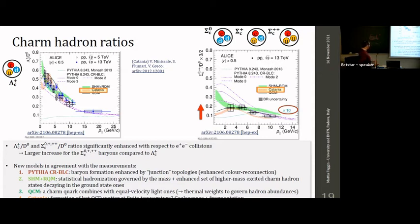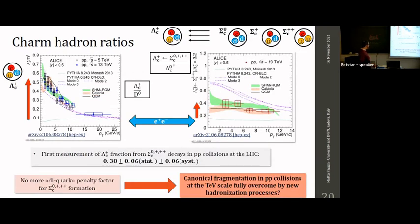All these models are in agreement within uncertainties with our measurement. We also provide the first measurement of the fraction of Lambda_c in proton-proton collisions at 13 TeV coming from the decay of Sigma_c states. The result shows this fraction is about a factor of two higher than what is expected in e+e− collisions — about 38% of Lambda_c seems to come from the decay of Sigma_c hadrons.